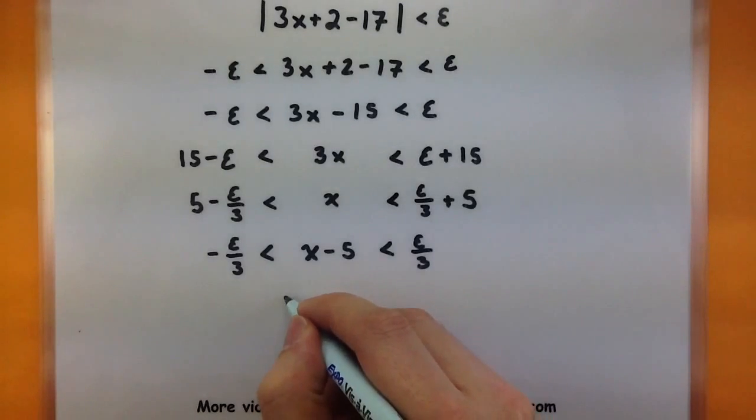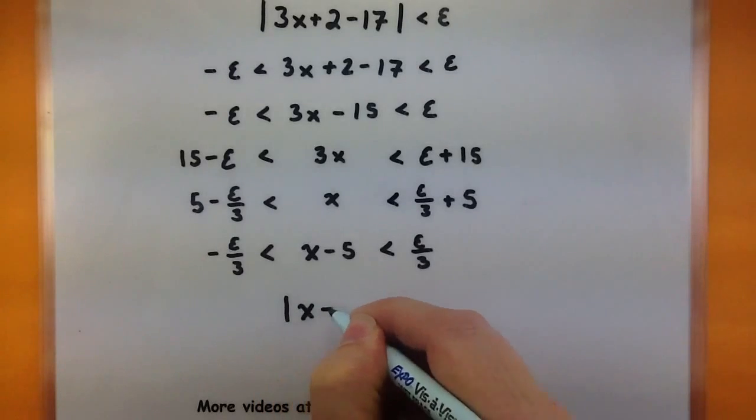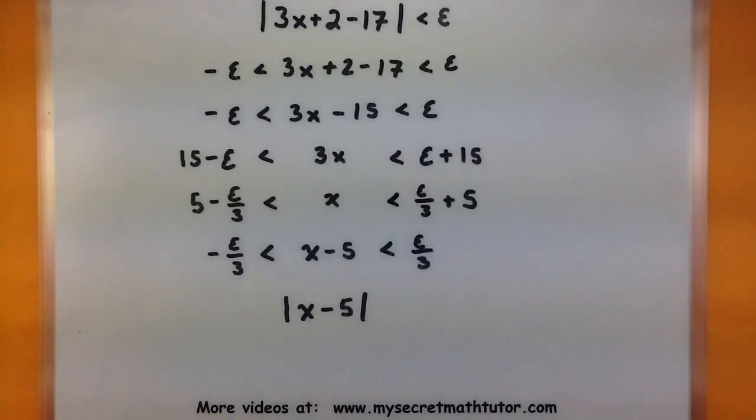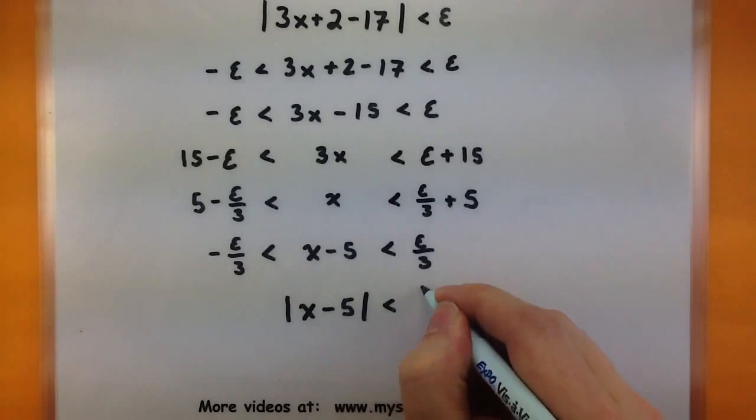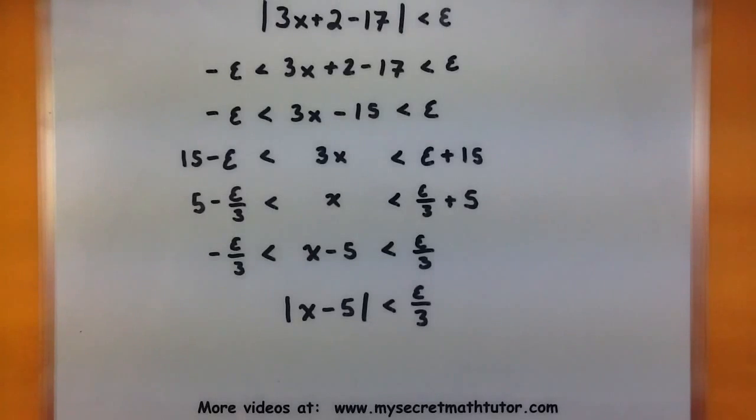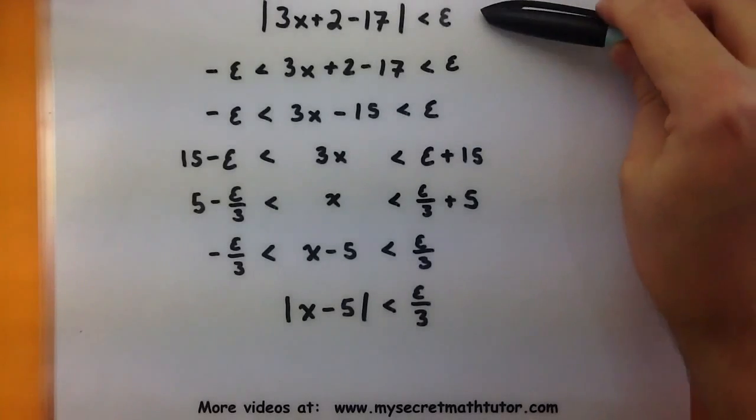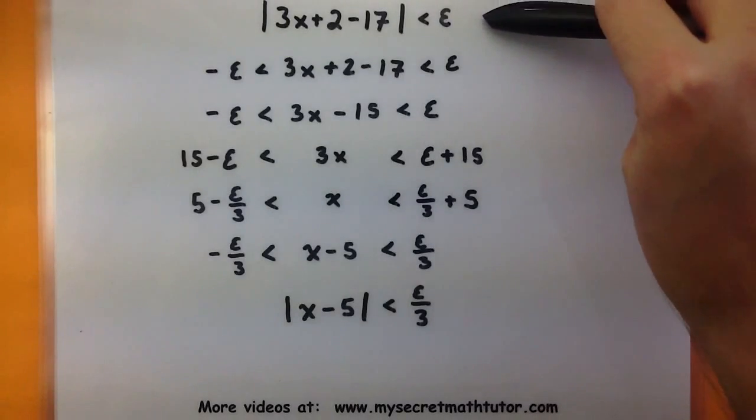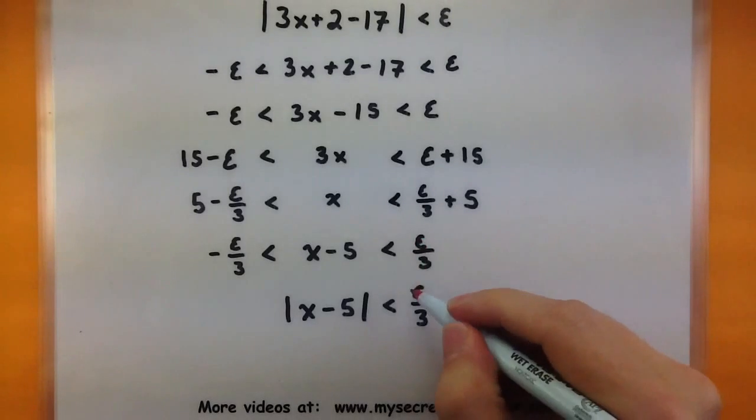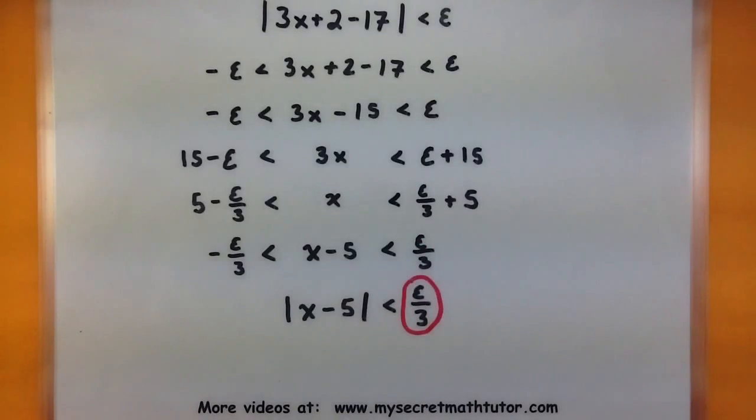I can use my absolute values to package this guy up. So I know that the absolute value of x minus 5 is less than epsilon over 3. So you can see we've started with the right side of that definition and we've actually built now the left side. The important part about doing this is we've actually discovered what we need to make our delta. It's this value right here.